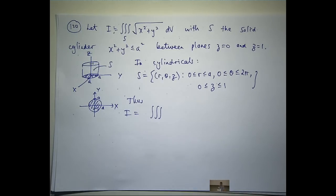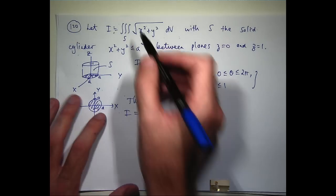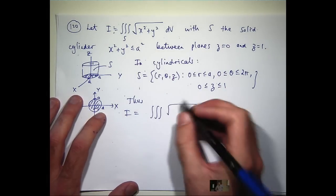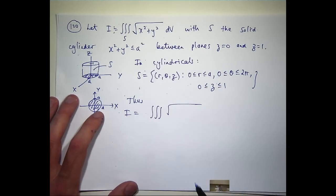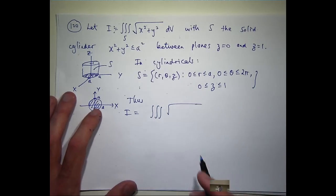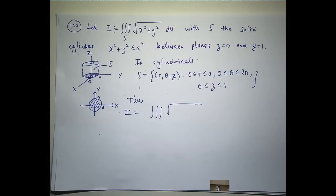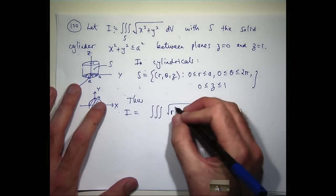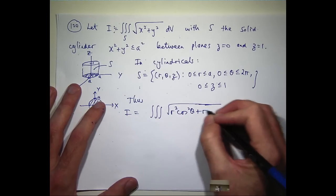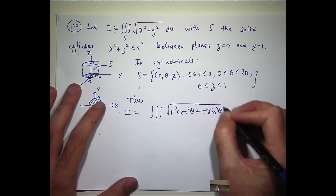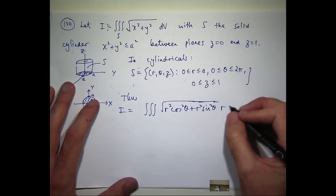So, we replace x with r cos theta, y with r sin theta and dv with r dz dr d theta. Or dz r dr d theta. You can do it a number of ways. I'm just going to do it this way.